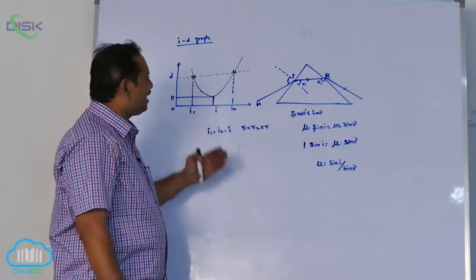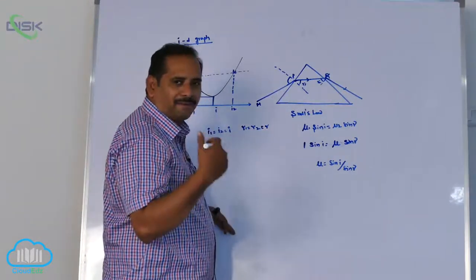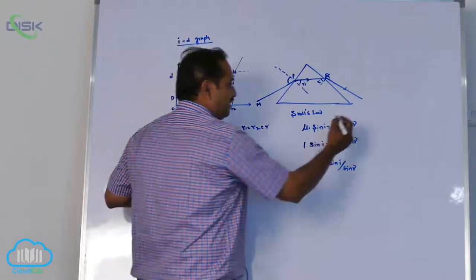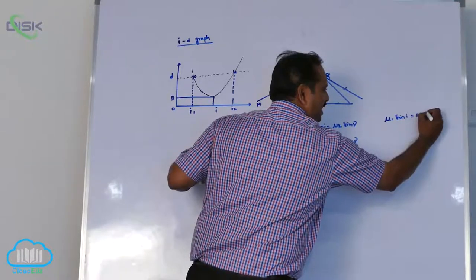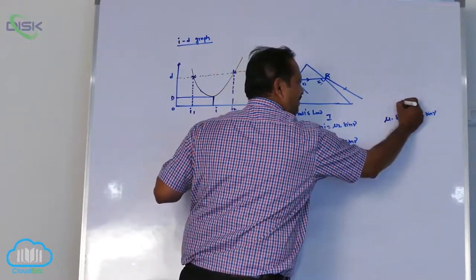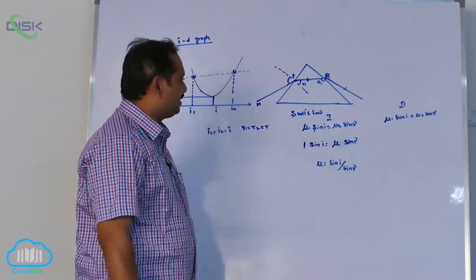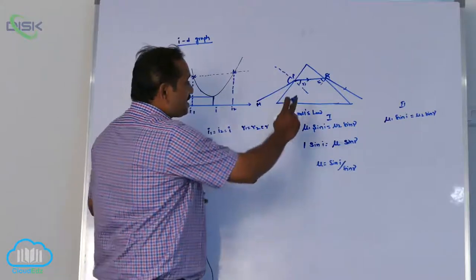Most of the people are confusing to apply this Snell's law at the secondary surface. Am I getting same or not? To check it: mu1 sin i equal to mu2 sin r for second surface. Any surface you can apply it. Most of the people confuse with the application of Snell's law.